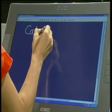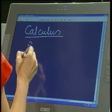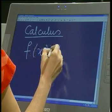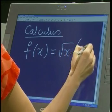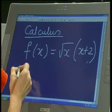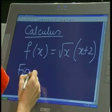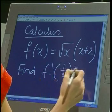The next maths question I want to tackle is a calculus question using a function that has a square root function in it. So if my function is the square root of x times x plus 2, I would like you to find what f dashed of a quarter would equal to.